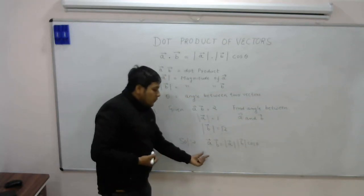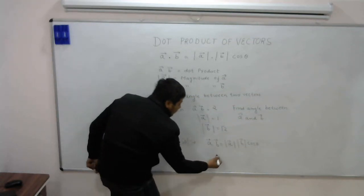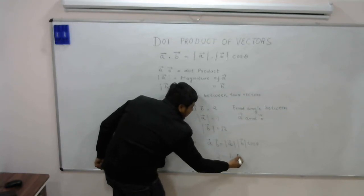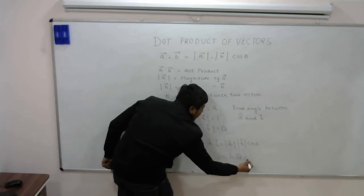Now we have the value for A dot B, that is 2 equals 1 into root 2 cos theta.